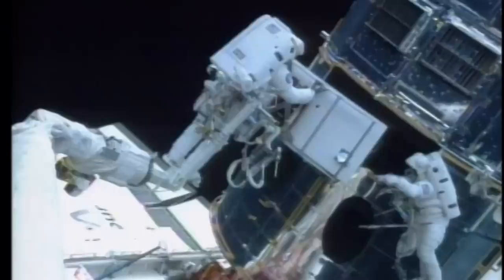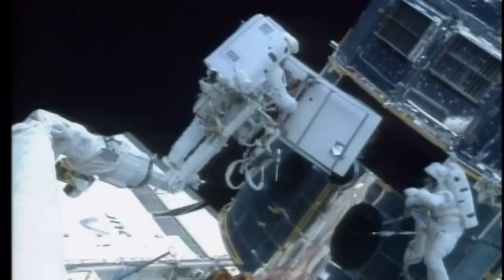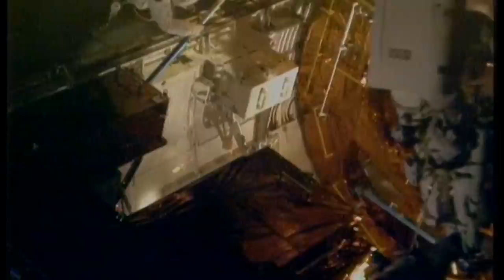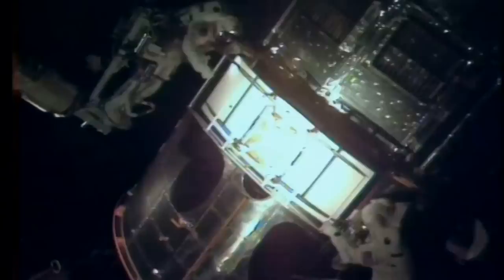Il faut ensuite replacer une caméra qui constitue à elle seule 50% du savoir-faire scientifique de Hubble. La moitié du temps, les astronautes travaillent à la lumière des projecteurs, car le télescope fait le tour de la Terre en 95 minutes et passe rapidement du jour à la nuit. La nouvelle caméra a ses propres optiques correctrices, plus des détecteurs améliorés.